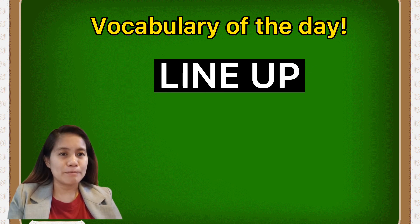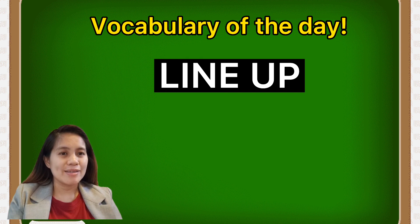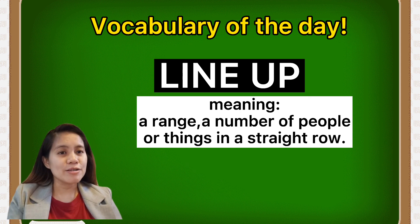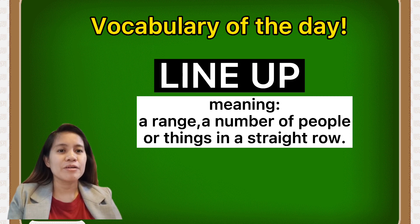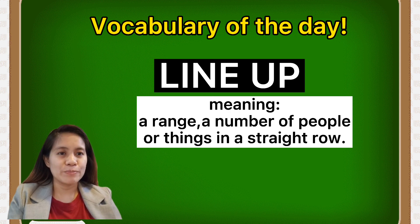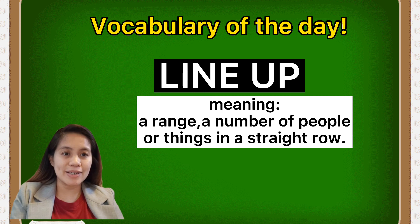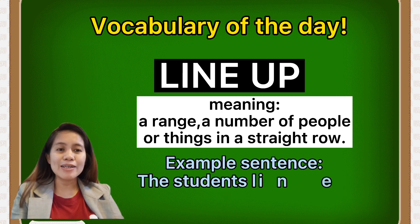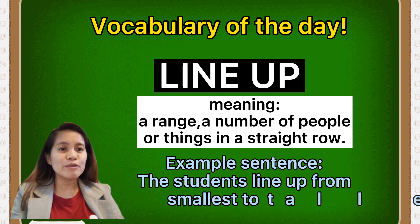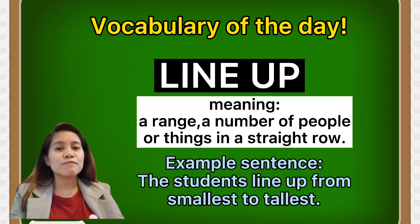Lined up. Can you say it? Lined up. Very good. Its meaning: arrange a number of people or things in a straight row. Let's have an example sentence: the students lined up from smallest to tallest.